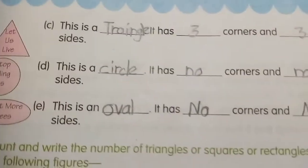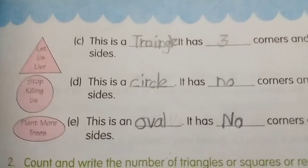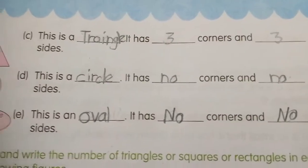C. This is a dash. It has dash corners and dash sides. This is a triangle. It has 3 corners and 3 sides.